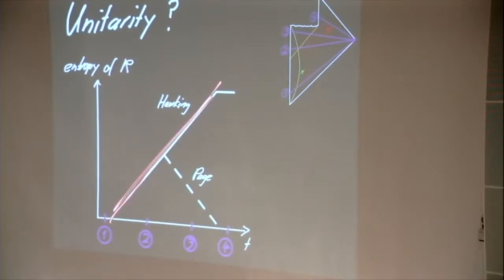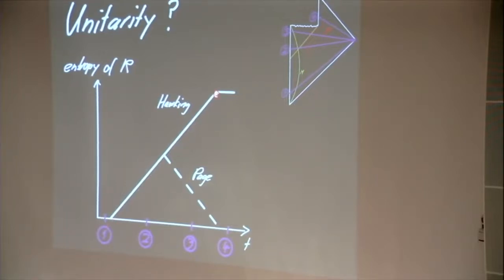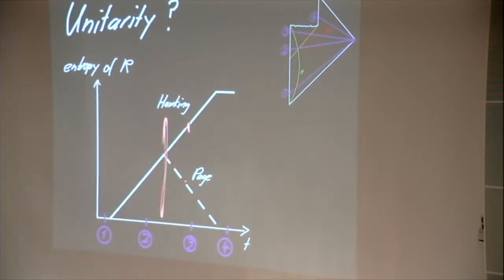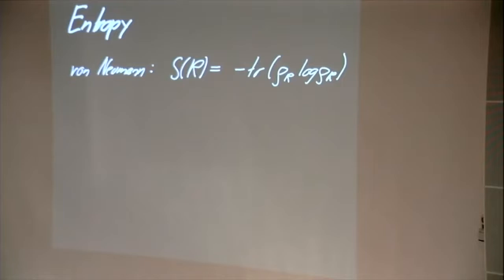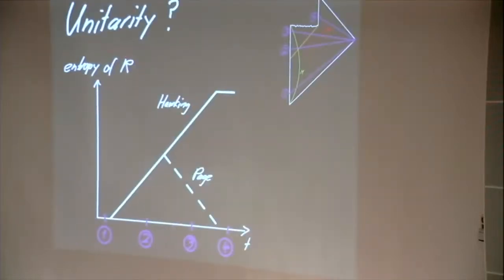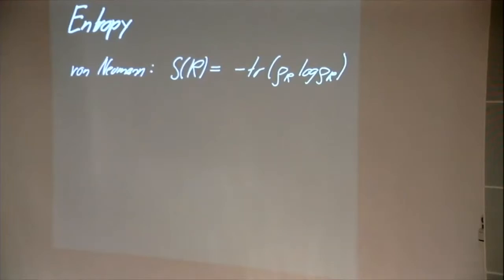In contrast to that is the calculation by Hawking, which used a model with quantum field theory in curved space-time, where he concluded that the entropy should always grow up to a maximum when all matter is turned into radiation. You see the curves are maximally different after the so-called Page time — there is the largest possible gap, the maximum information paradox. I intentionally wrote just 'entropy' without being more precise, as you will see later.